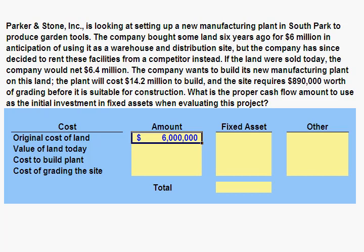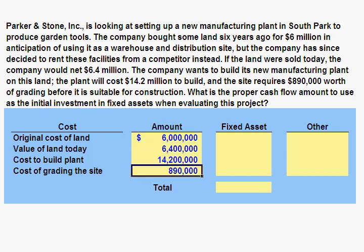If the land were sold today, the company would net $6.4 million. The company wants to build its new manufacturing plant on the land. The plant will cost $14.2 million to build, and the site requires $890,000 worth of grading before it's suitable for construction. What is the proper cash flow amount to use as initial investment in fixed assets when evaluating this project?